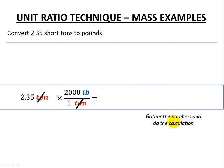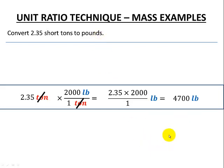We'll gather our numbers and do our calculations. So 2.35 times 2,000 and just divided by 1. And note again, I didn't mention this before, but LB is the symbol for pounds in the imperial system. And we get 4,700 pounds as our answer.